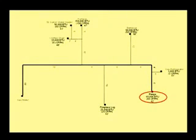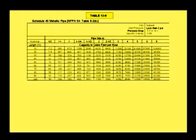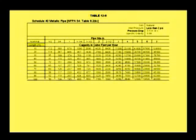Beginning at the most remote appliance and working back to the meter, we have the range with a demand of 65 cubic feet per hour. Refer to table 12-8. Under length in the left column, locate the row that will accommodate 62 feet, which is the 70-foot row. Once you locate the appropriate row, never change from this row when calculating the main supply line. Looking to the right to find the number that will allow 65 cubic feet per hour — 126 — we see that a 3/4-inch pipe will accommodate the 65 cubic feet per hour demand for the range.